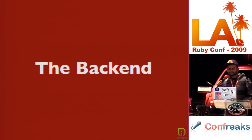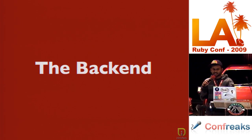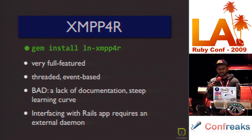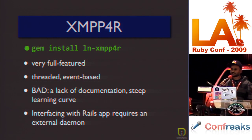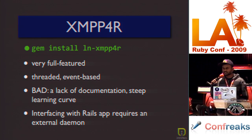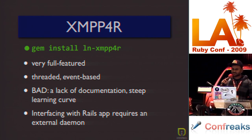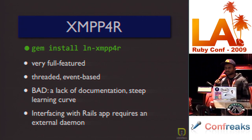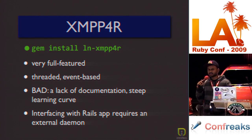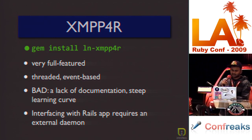Let's talk about the back end. In my opinion, there are only two good Ruby libraries for XMPP. The first is XMPP4R — it's been around for maybe three or four years, it's very full-featured, and it's threaded and event-based. The bad news is documentation is almost non-existent. It's very stable, but because of the threads, you can't really directly run it in a Rails app — you'll have to run an external daemon and connect to it using Rails. I would recommend this for XMPP applications that don't have to interface with Rails, like TwitterSpy.